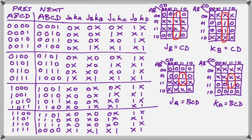Now we plot the KB and JB and the KA and JA, and we see that the JB reduces to CD, and so does the KB, the same thing, and the JA reduces to BCD, and the KA reduces to BCD.